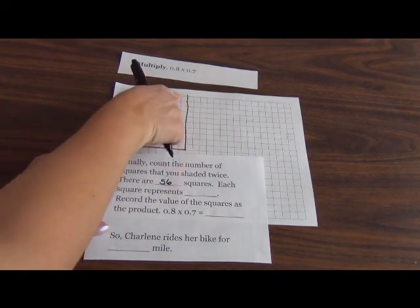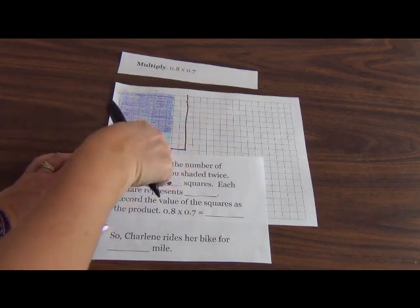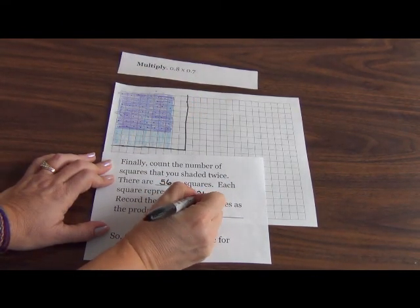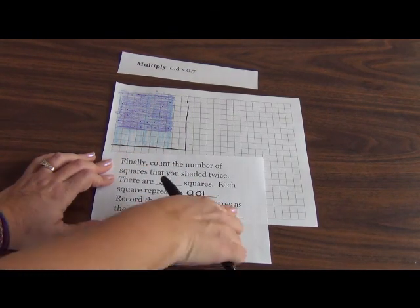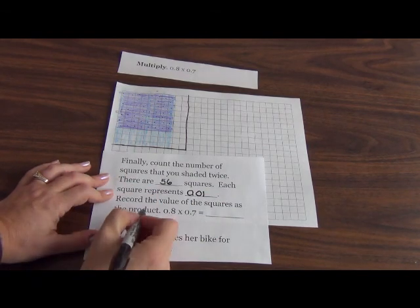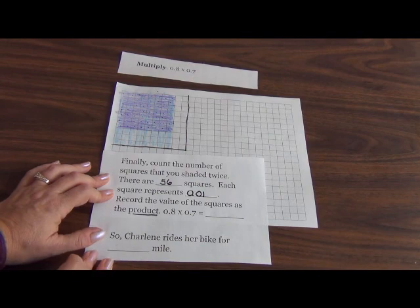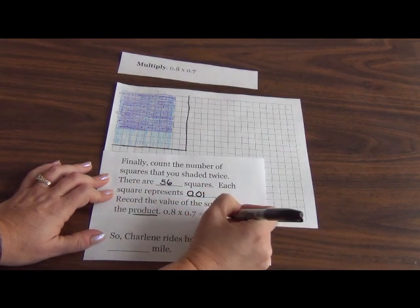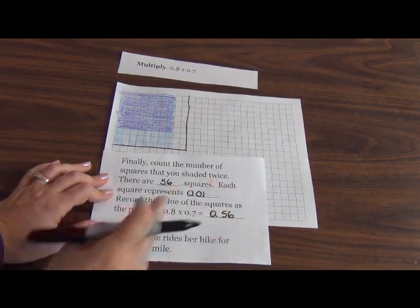Each square represents one part of 100 squares, or 1/100. I'm going to record the value of the squares as the product - remember the product is the answer to a multiplication problem. So I'm going to write down 56/100, and that is my answer.